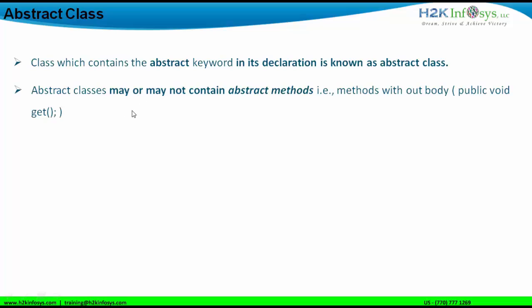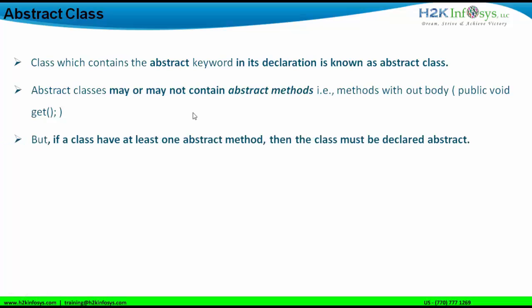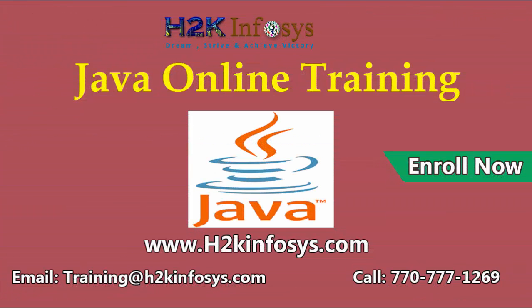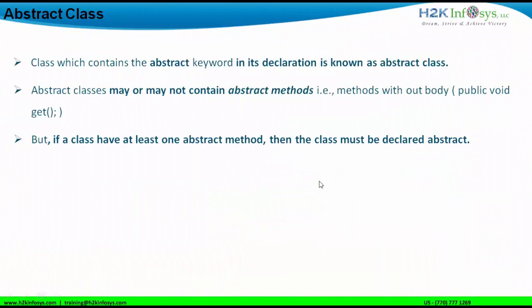It is not compulsory that an abstract class should have abstract methods — you may or may not have them. However, if a class has at least one abstract method, then that class has to be declared as abstract. Abstract methods cannot be part of a regular public class.